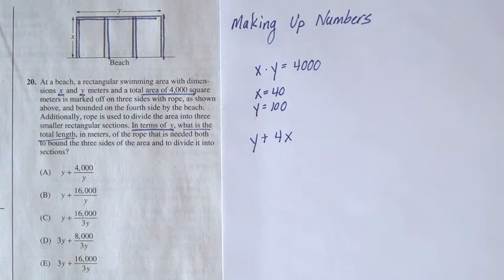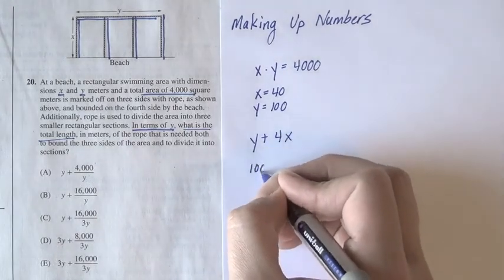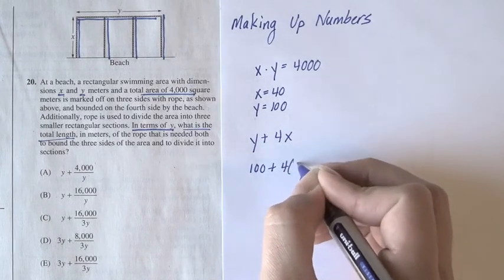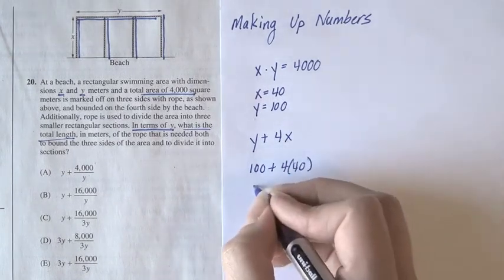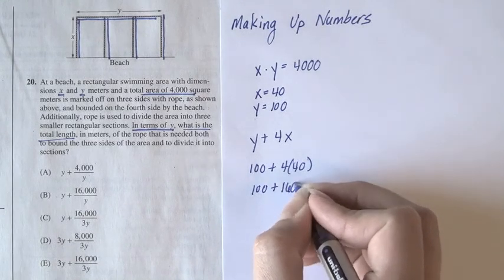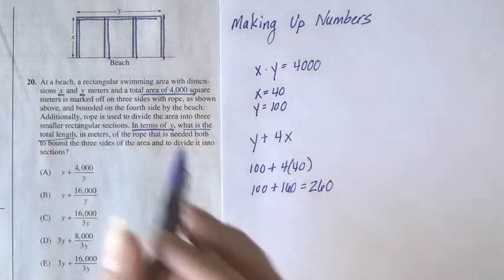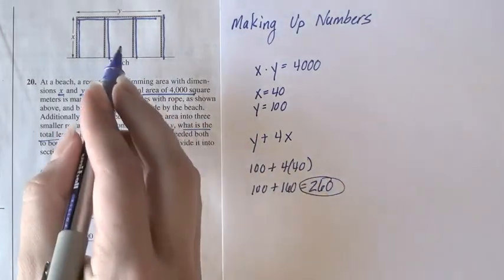Now, what we're going to do is take the numbers we've made up for x and y and plug them in so we get a numerical result. Okay, so that'll be 100 plus 4 times 40, or 100 plus 160 equals 260. So we know that the answer to the question is that you need 260 meters of rope.